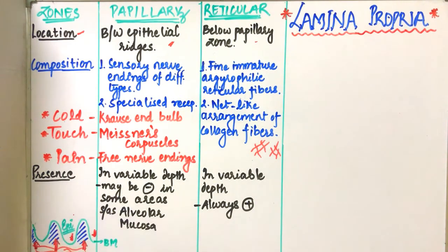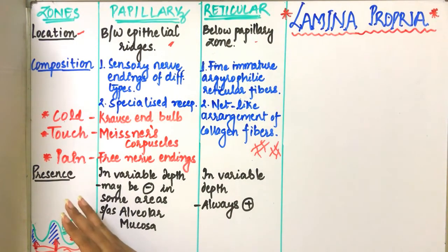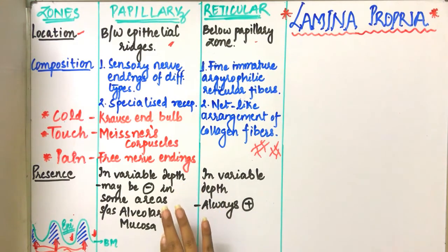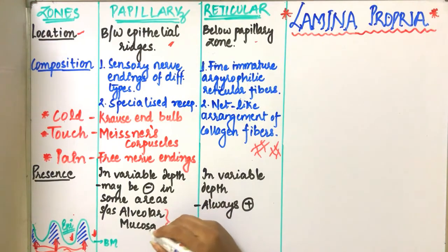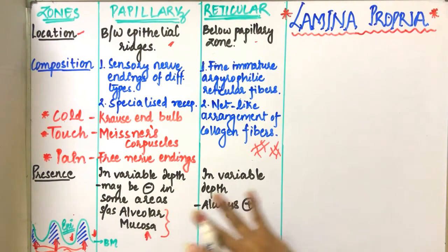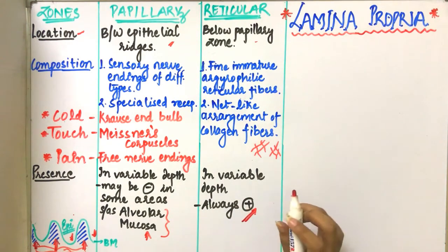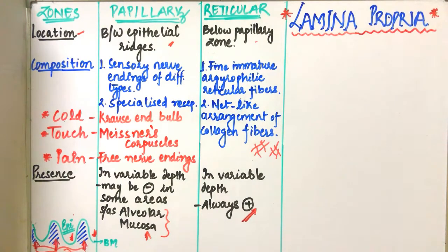The papillary zone may be present at variable depth and may be present in some areas, but remember it is absent in the alveolar mucosa. The reticular zone may also be present at various depths, but it is always present.